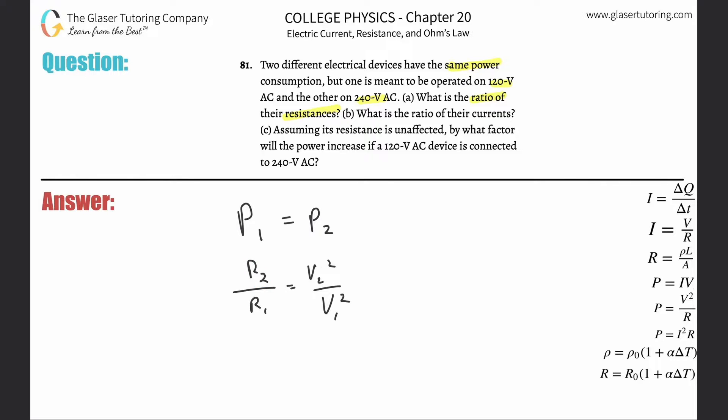All you got to do now is just plug in the values. R2 over R1 will equal V2, which was the 240, over then the 120—both of those are squared. When you calculate that, you would get an answer of 4. So that'd be the ratio R2 to R1. That takes care of letter A.